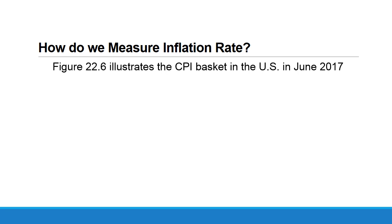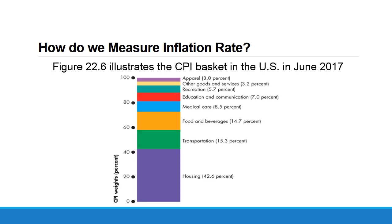In this figure, we show the CPI basket and its components in the United States in June 2017. Observe the large part represented by housing — housing represents about 42.6 percent of the monthly budget of an American consumer, so it has a large weight in calculating the CPI. Then come transportation, food and beverages, and so on.